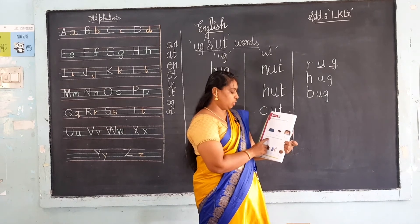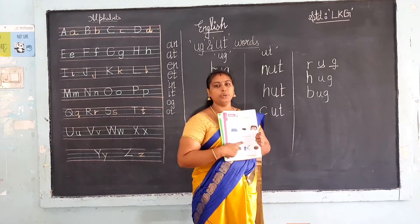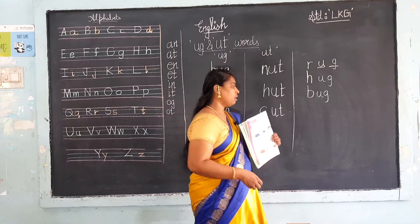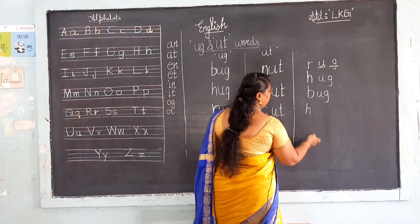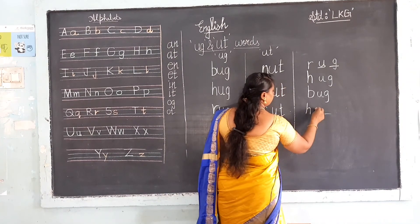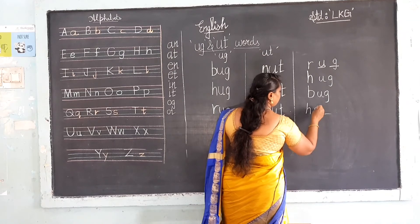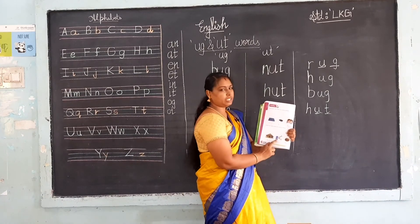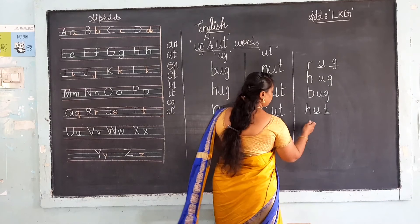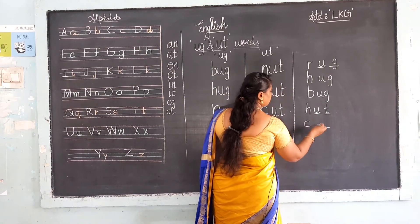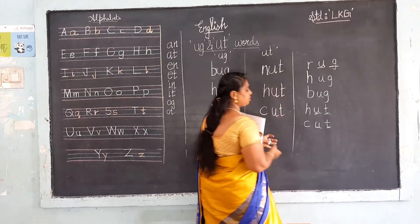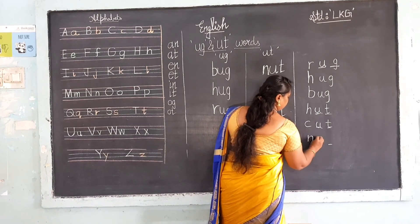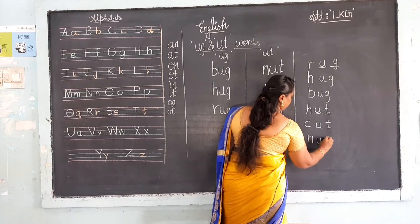Now this one — UT words. Trace UT and write the missing letter. You want to trace UT. See the first picture — what is this? H, dash and dash. H, U, T — hut. See the second picture — what is this? Cut. K, dash and dash. K, U, T — cut. The next one: N, dash and dash. N, U, T — nut.